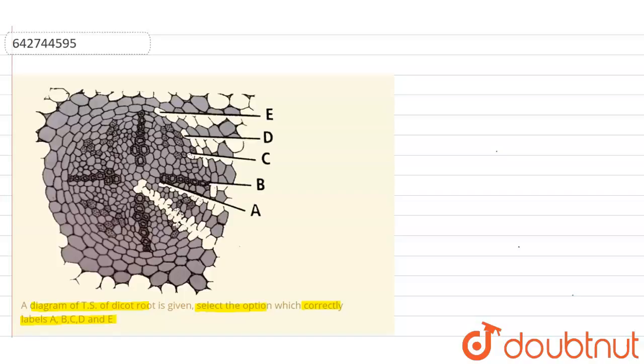If pith is present, it is very small and undeveloped. So from the labels, that is labeled as A, it is the metaxylem. So A is metaxylem.